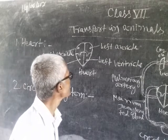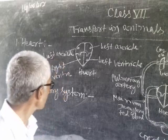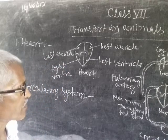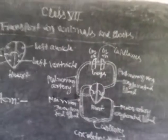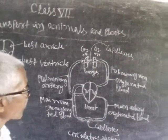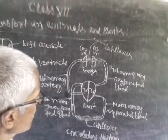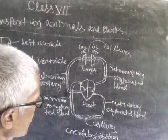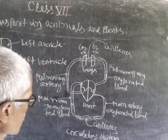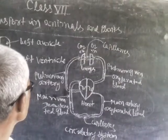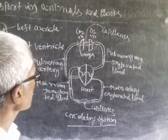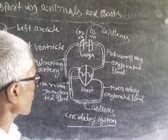Now, I will tell you about the circulatory system in human beings. The circulatory system consists of some organs such as artery, vein, capillaries, heart and lungs.